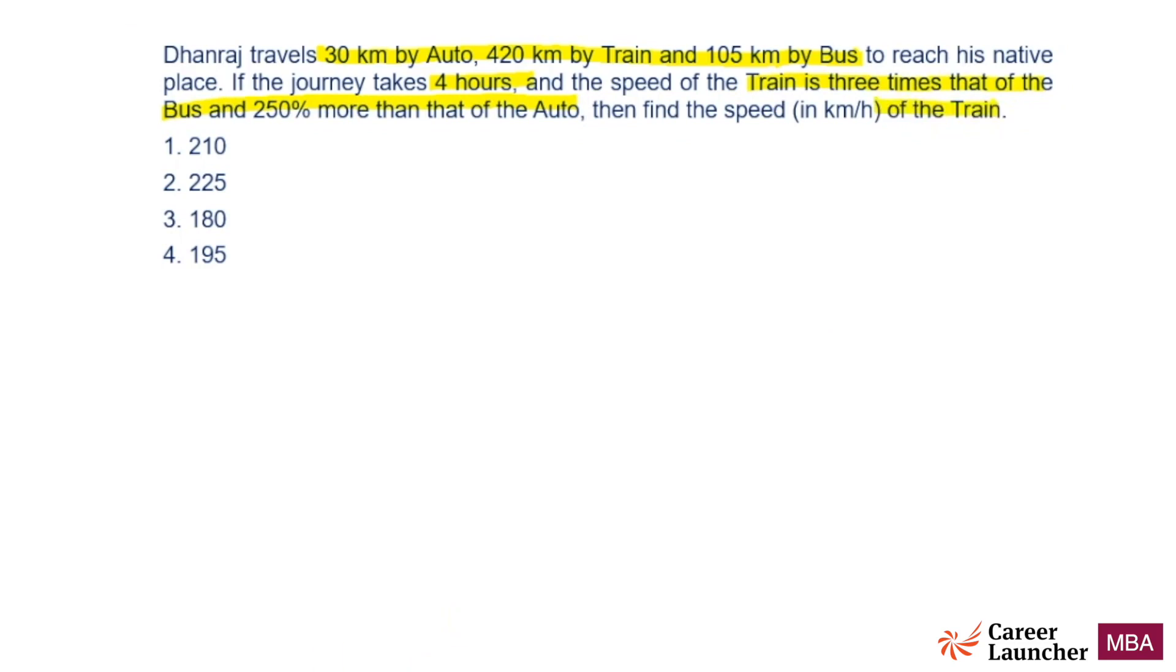We need to find the speed of the train. This is a question of ratios. Let's look at the numbers first. The three items are auto, bus, and train. Let us find out the ratio of speeds for each one of them.